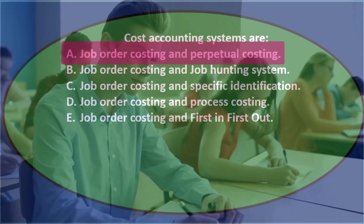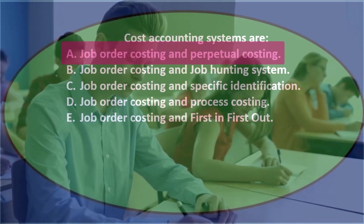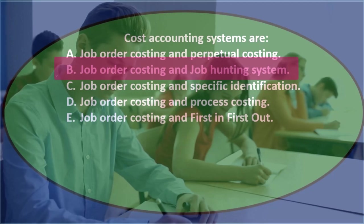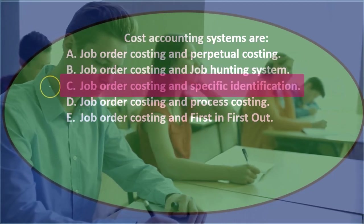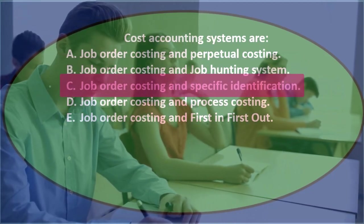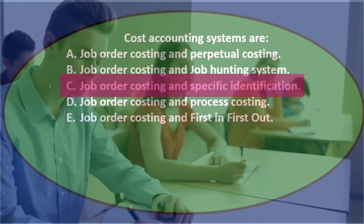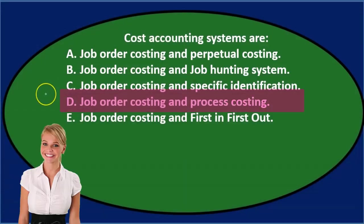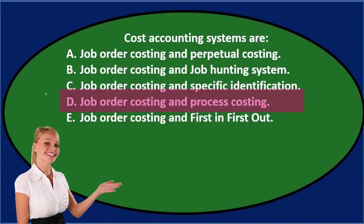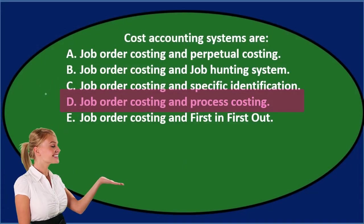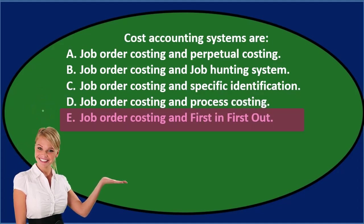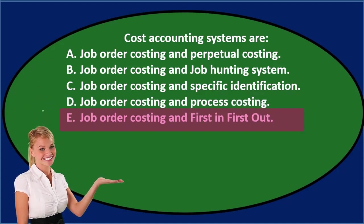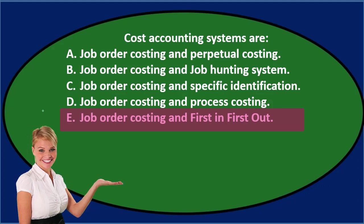Next question: cost accounting systems are — A: job order costing and perpetual costing, B: job order costing and job hunting system, C: job order costing and specific identification, D: job order costing and process costing, E: job order costing and first in first out.